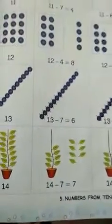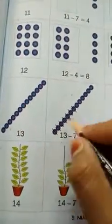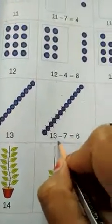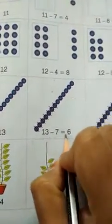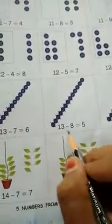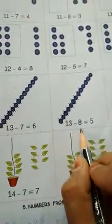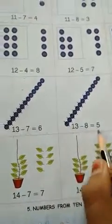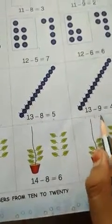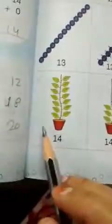Here is 13. What is 7? 13 minus 7 is equal to 6. 13 minus 8 is equal to 5. 13 minus 9 is equal to 4.